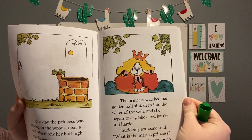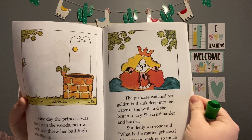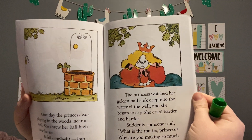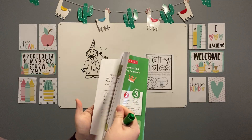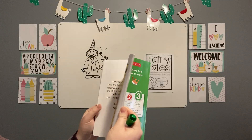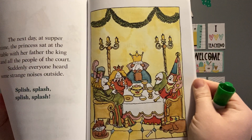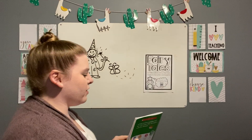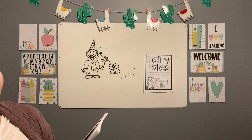Does it only have one setting or multiple settings? Like Rocky Gets Dressed — that has a lot, right? So we have the well outside, and we have inside the palace. So it has a couple of different settings.